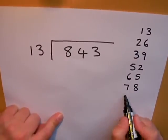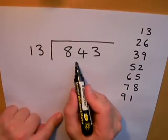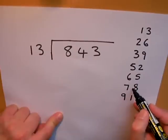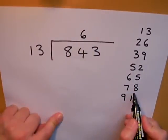91 has gone beyond 84, so how many 13s are there in 84? 1, 2, 3, 4, 5, 6—six 13s are 78, and I'll write that down. I have to work out my remainder now.